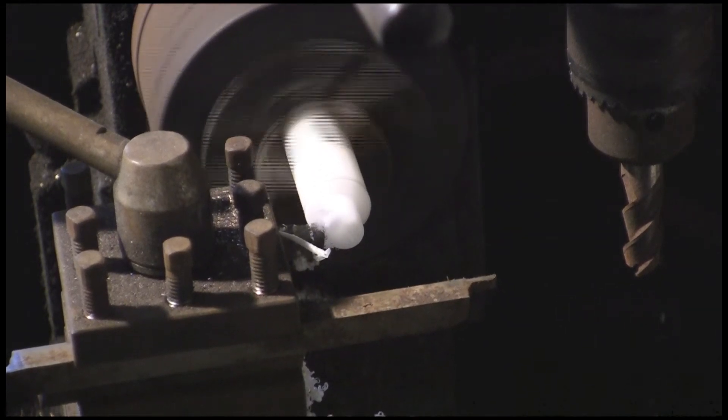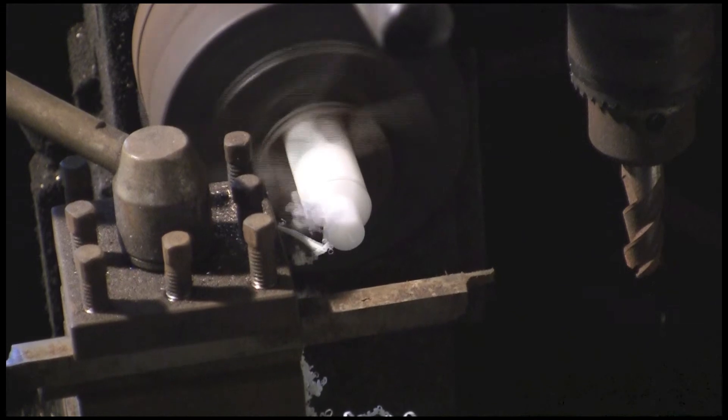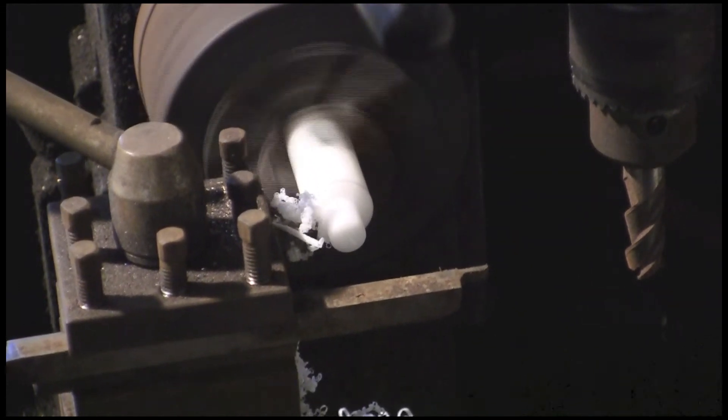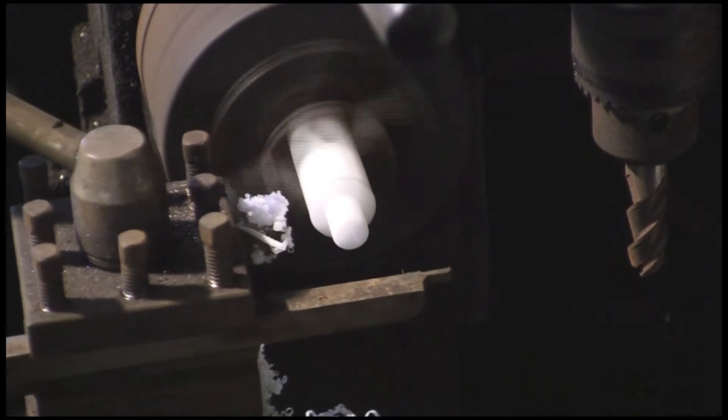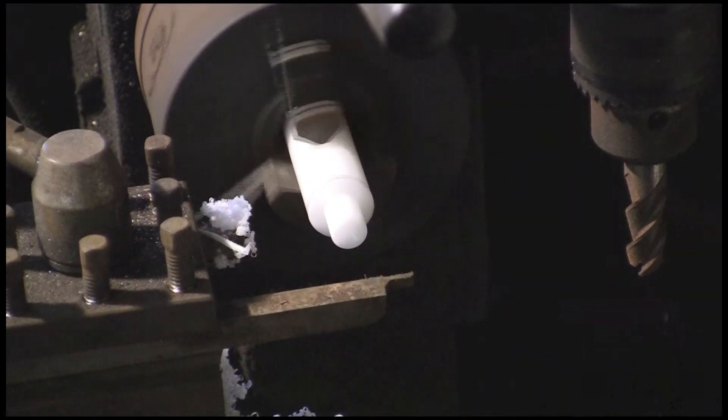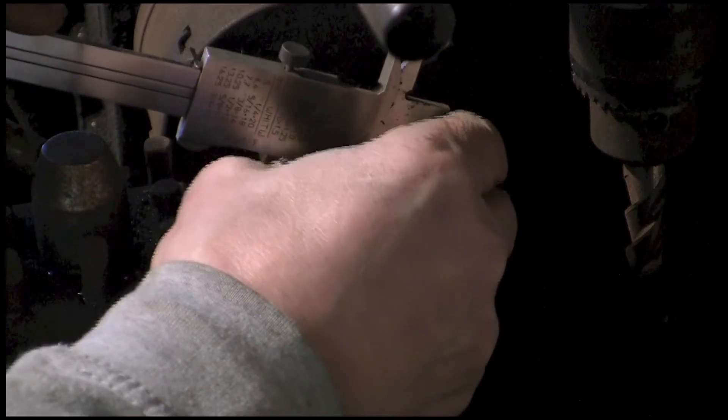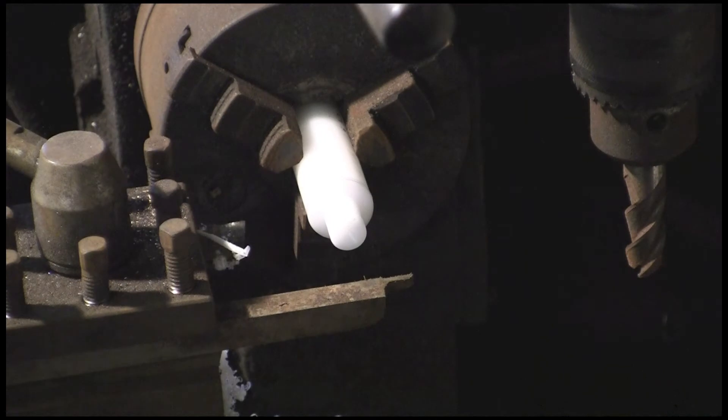So you can see even that taking a tiny, tiny little cut off this stuff, it cuts quite nicely. I'm just using a high speed steel tool. Nothing special, no carbide or anything. You don't need it on this. I think we're probably there.